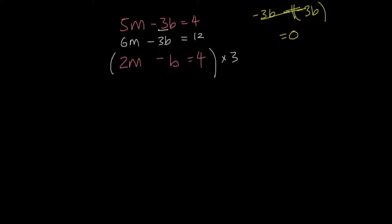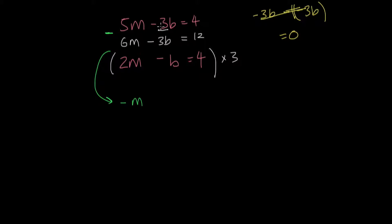So I have to subtract negative 3b from negative 3b to get 0. And if I'm subtracting this term from this term, I have to subtract all of the terms by their respective terms. So what I actually end up doing is I'm subtracting the second equation from the first. That gives me 5m minus 6m, which is negative m, and negative 3b minus negative 3b is 0, so we don't have to worry about that. Equals 4 minus 12, which is negative 8.